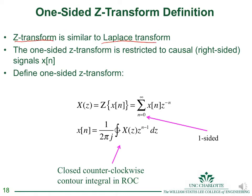The Z-transform is very similar to the Laplace transform — it can be thought of as the Laplace transform of digital systems. So it serves a central and important role.